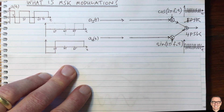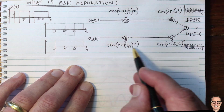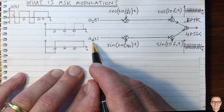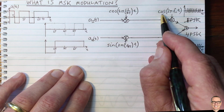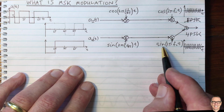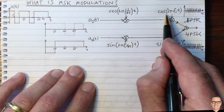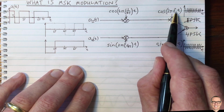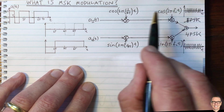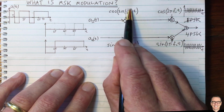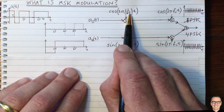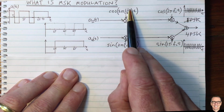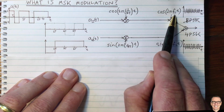There's an extra multiplier on the in-phase component and another on the quadrature component. The in-phase multiplier is a cosine, matching the cosine carrier, and the quadrature is a sine, matching the sine carrier. This extra term is very similar to the carrier — the only difference is the frequency. The carrier is at F_C (very high frequency), while this new term is at a frequency of 1/(4T), where T is the period of the data.